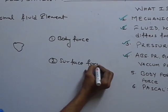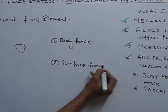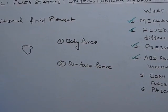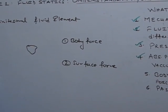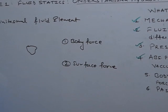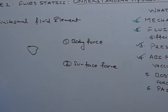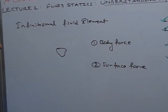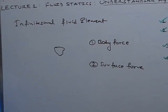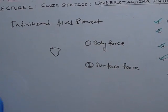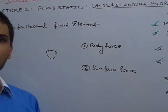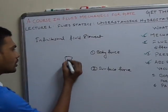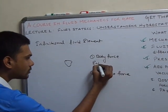Body force is the distributed force that acts on the entire volume of the fluid element. Examples of body force include the gravitational force, the force due to electricity, or the force due to magnetism. This type of force acts on the entire volume of the body.